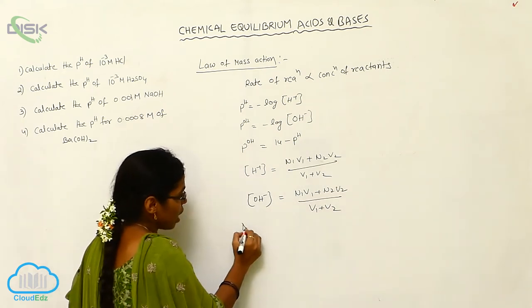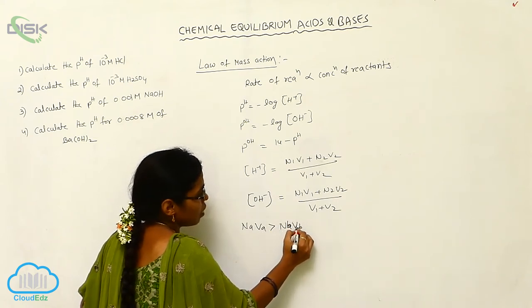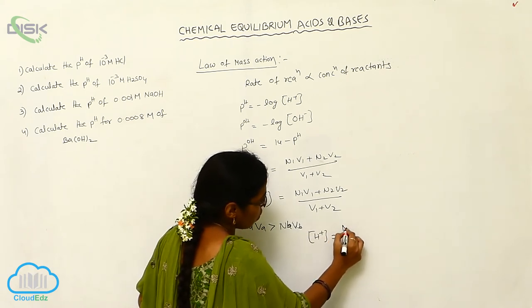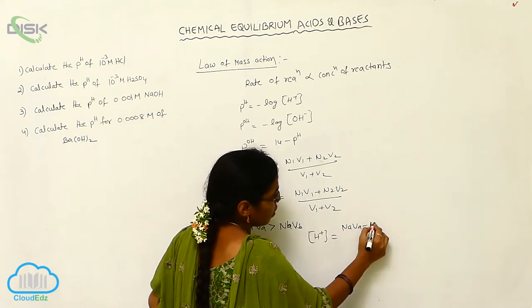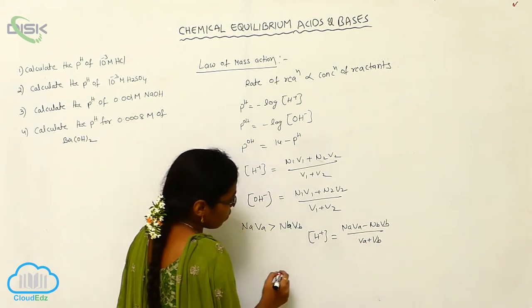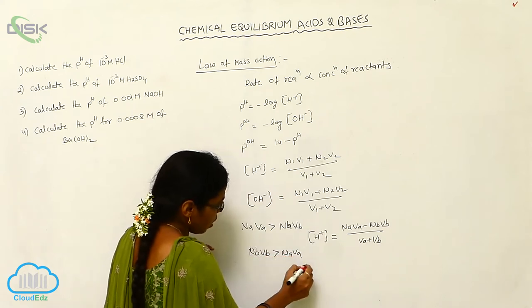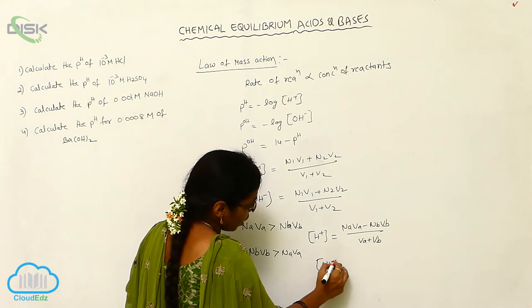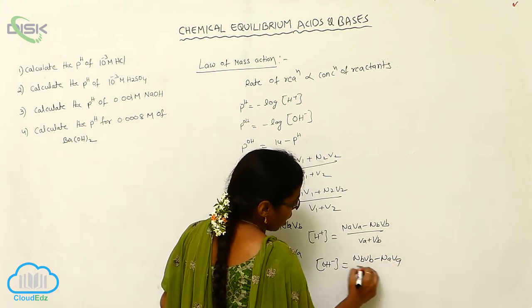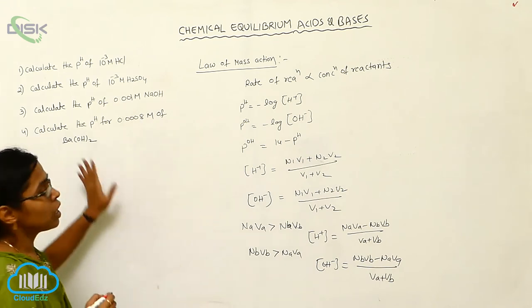If the volume NₐVₐ is greater than NbVb, we can write the OH⁻ concentration as (NₐVₐ − NbVb) / (Vₐ + Vb). If NbVb is greater than NₐVₐ, then the OH⁻ concentration is (NbVb − NₐVₐ) / (Vₐ + Vb). These are the formulas used for the calculation.